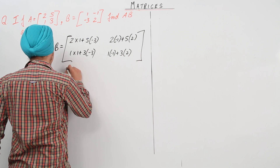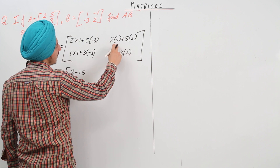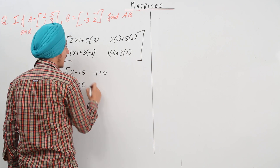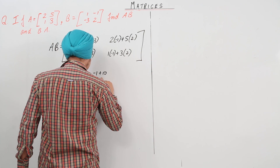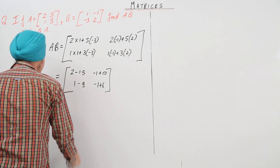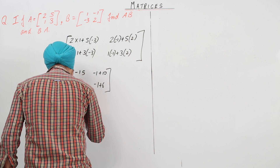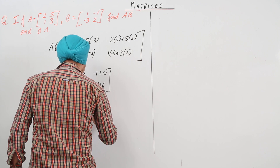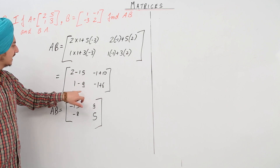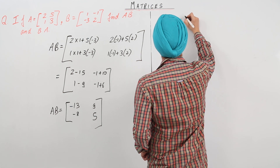So this gives us: 2 into 1 is 2 minus 15, giving minus 13; 2 into minus 1 plus 10 gives 9; 1 minus 9 gives minus 8; and minus 1 plus 6 gives 5. So AB is equal to [-13, 9; -8, 5].